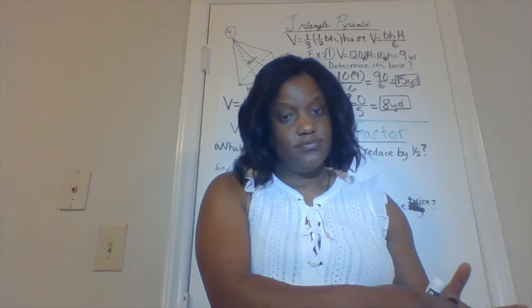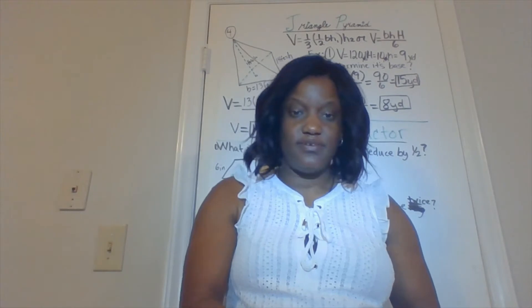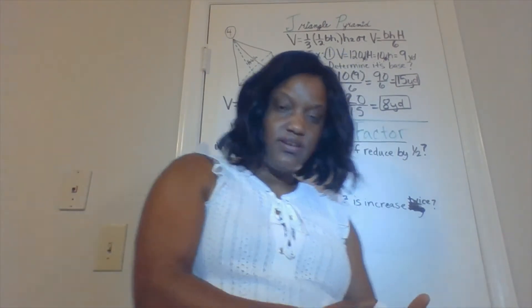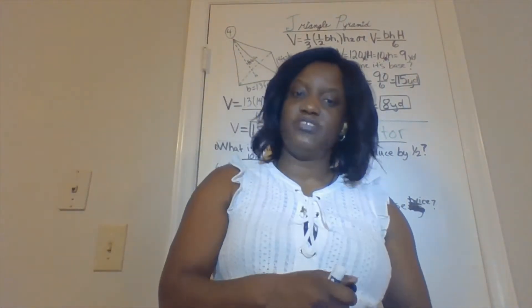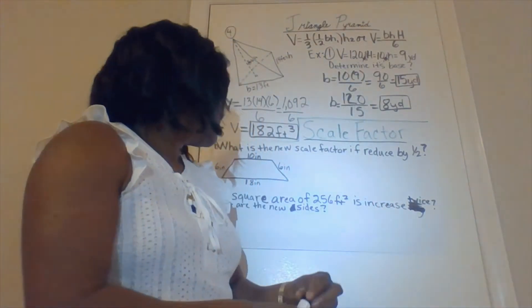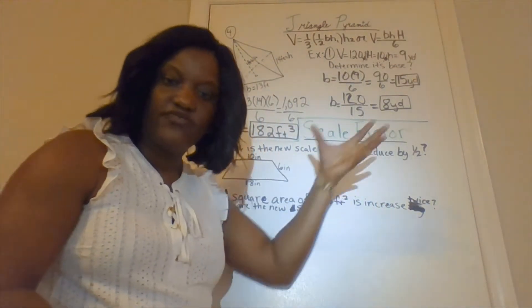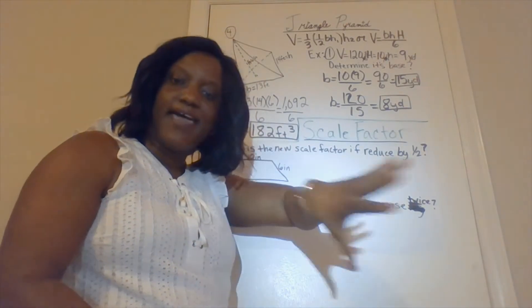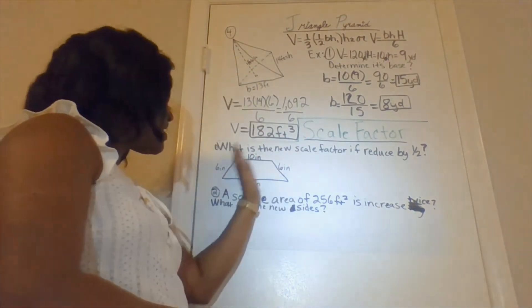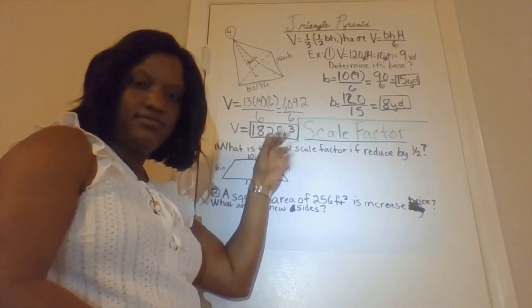Reduce, divide. If it's increasing, twice the number, triple the number, you're multiplying. So all I have to do is find the half answer for all of these dimensions.